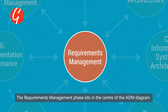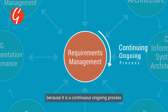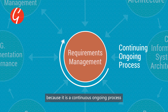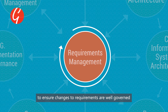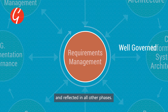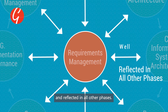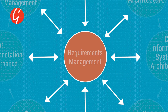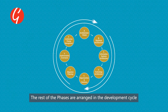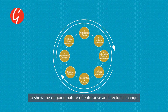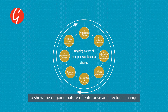The requirements management phase sits in the center of the ADM diagram because it's a continuing, ongoing process to ensure changes to requirements are well-governed and reflected in all other phases. The rest of the phases are arranged in the development cycle to show the ongoing nature of enterprise architectural change.